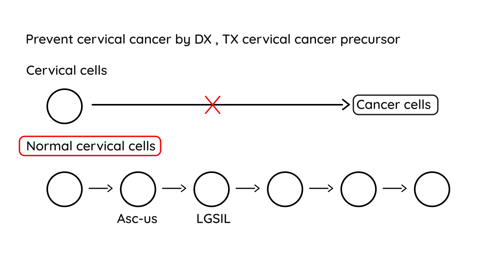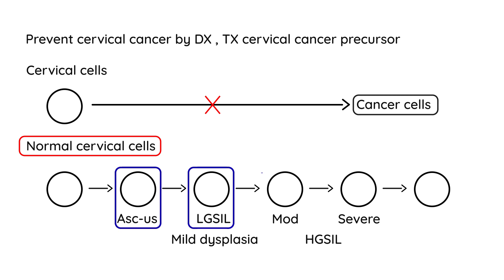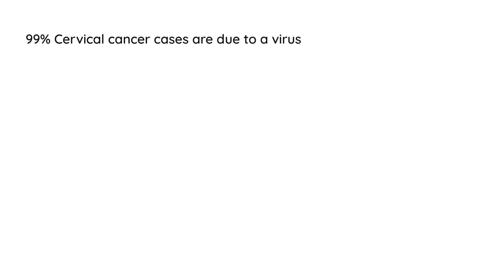There's LGSIL — low-grade squamous intraepithelial lesion — and high-grade squamous intraepithelial lesions. These are often described as dysplasia: mild dysplasia, moderate dysplasia, and severe dysplasia. The pap smear is trying to catch cells at any of these precursor stages before they progress to full-blown cervical cancer. An important point is that 99% of cervical cancer cases are due to a virus known as HPV — human papillomavirus — which is often tested on clinical vignettes.